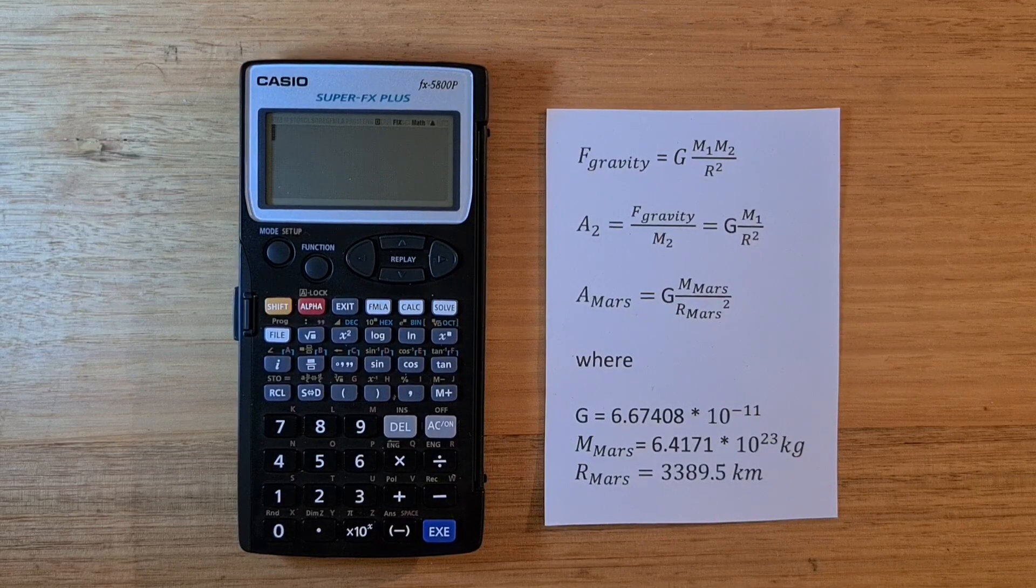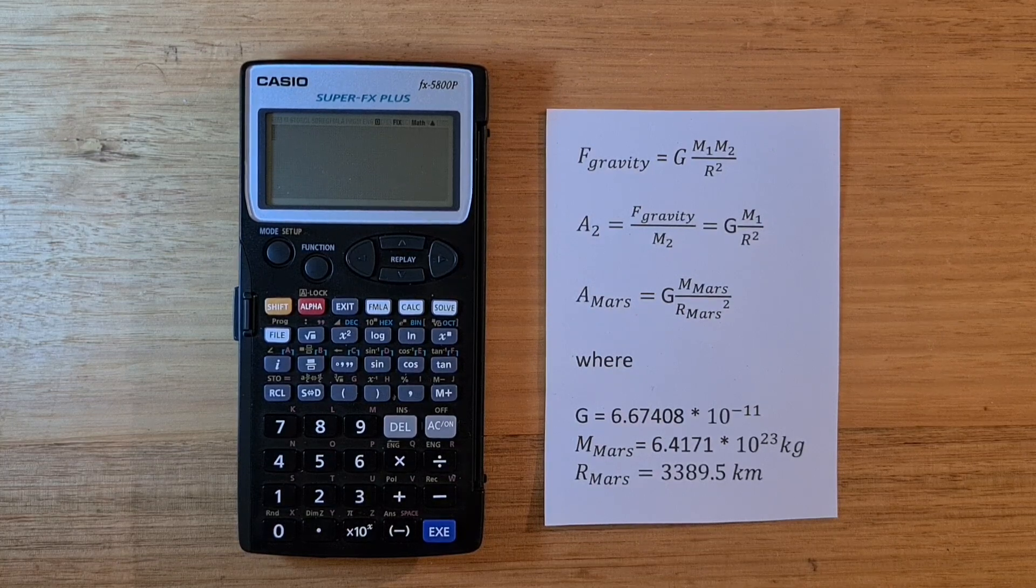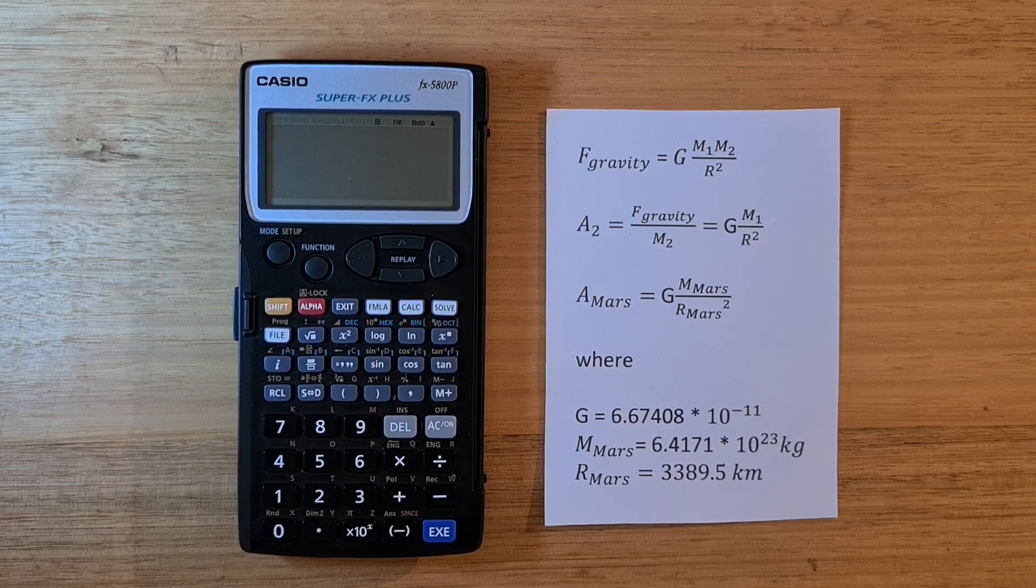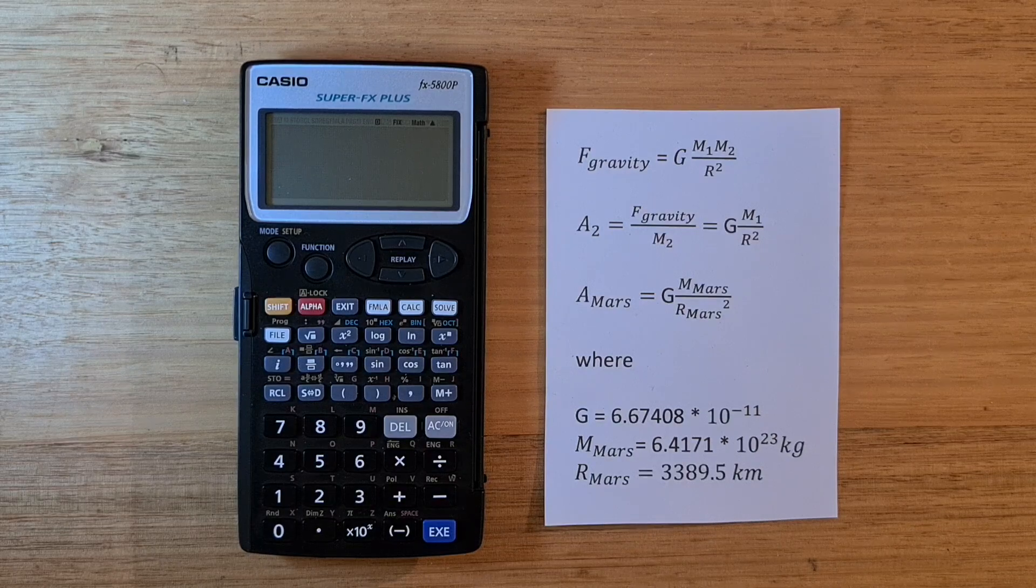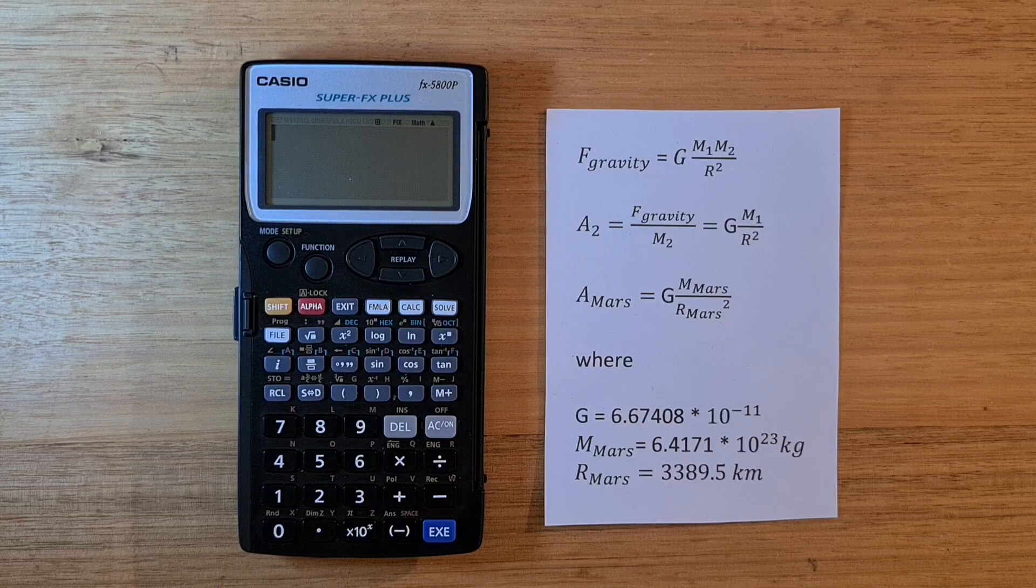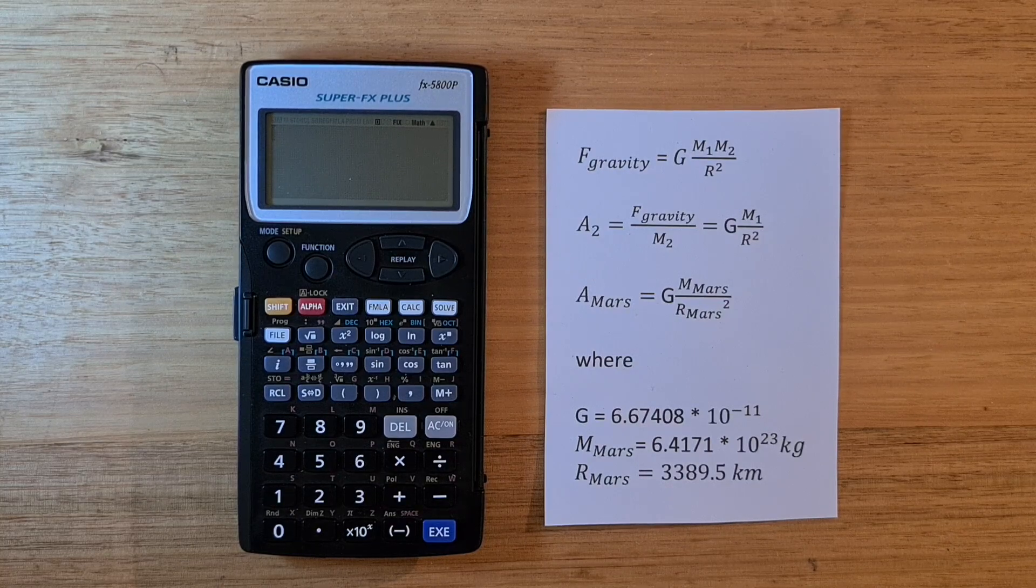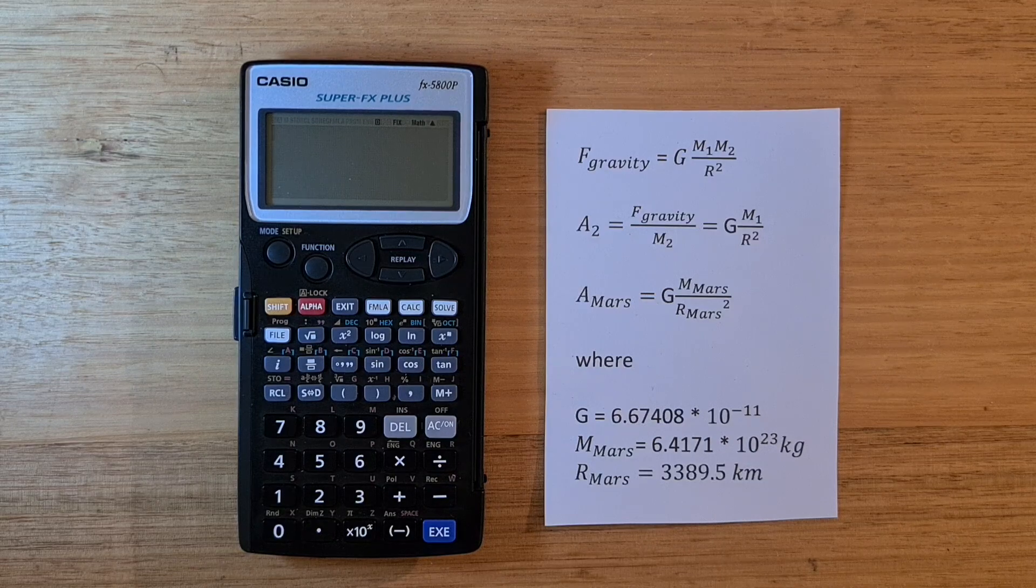The 5800P, like other Casio calculators, is highly modal. And the main mode is mode one, calculation mode. And this supports natural textbook like display where equations can take up most of the screen. And also linear line display where equations sit on one line. So currently we're in natural display.